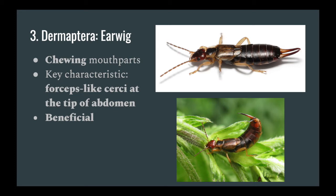Dermaptera, or earwigs, are small and long with large scissor-like structures called cerci at the end of their abdomen. It's important to not confuse earwigs with rove beetles, as rove beetles are a beetle and lack these cerci, while earwigs have the large cerci.